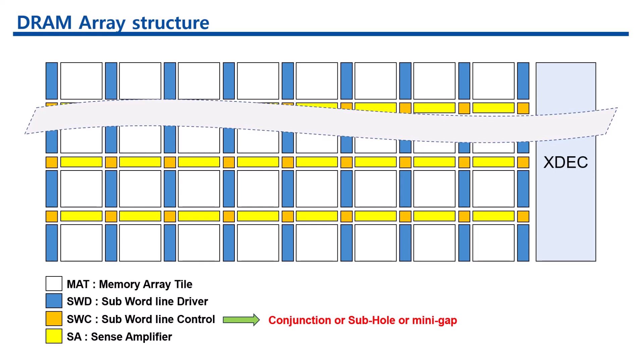BLSA, bitline sense amplifier, amplifies the small differential voltage on the bitlines BL and BLB during read operations to determine the stored data.